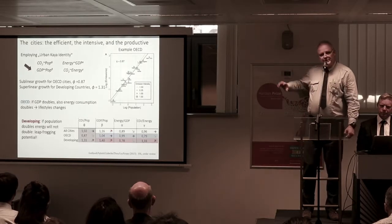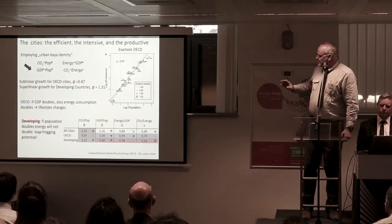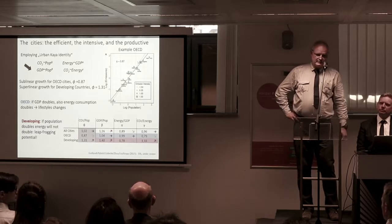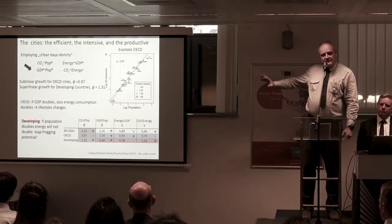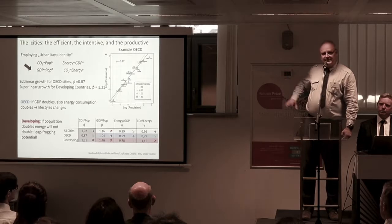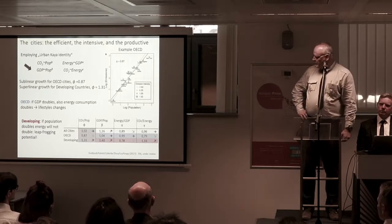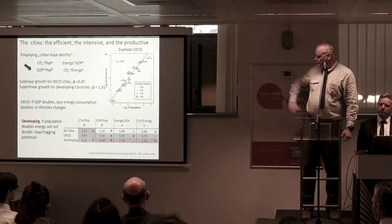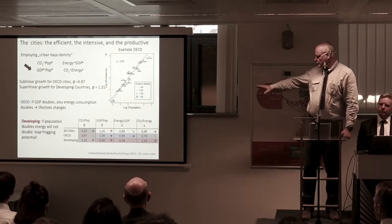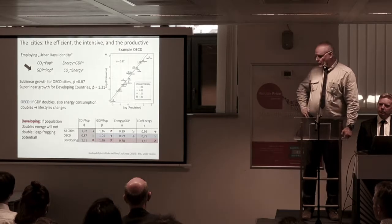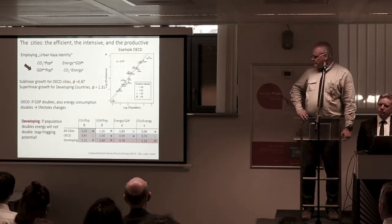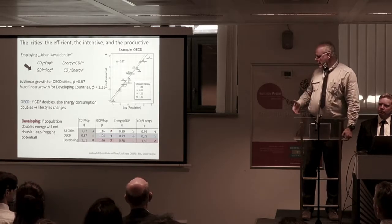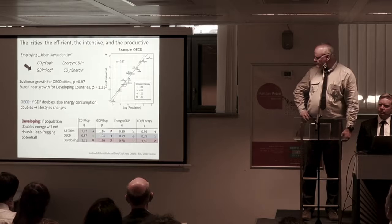I will also explain a little bit about cities. What you see here is an application of the so-called Kaya identity to cities — particularly to cities in the OECD and in the developing world. You see quotients here: CO2 per population, for instance. If you look at all cities it is approximately one — a linear relationship. In the OECD, which is good news, we are going down to 0.87.